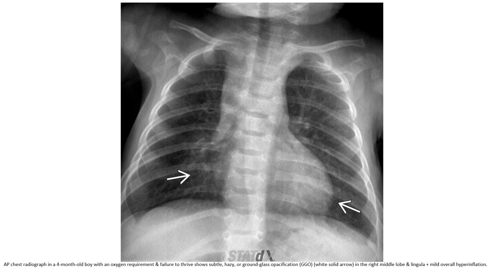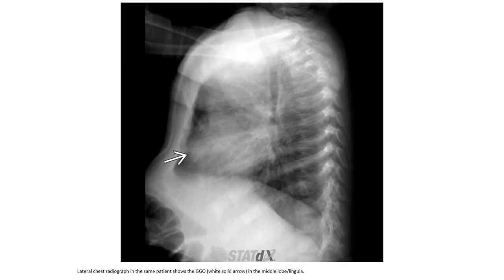AP chest radiograph of a four-month-old with oxygen requirement shows ground-glass opacity in the right middle lobe and lingula, with mild overall hyperinflation. The lateral chest radiograph of the same patient also shows ground-glass opacification in the middle lobe and lingula.